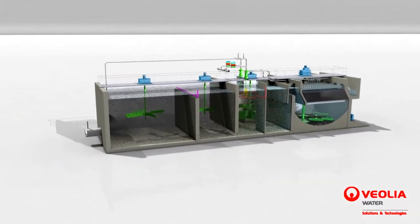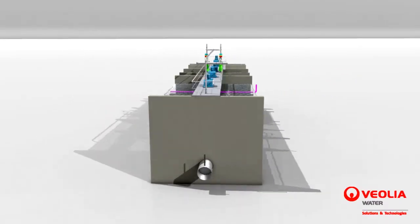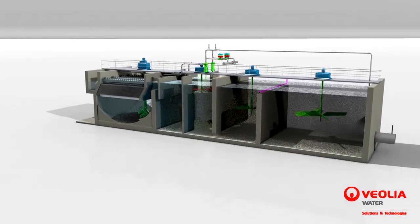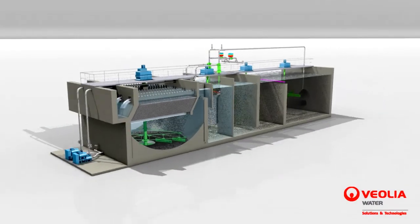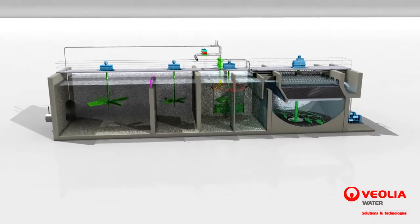Actiflo carb effectively removes micropollutants and refractory compounds to achieve unparalleled treated water quality. The process can be easily integrated into existing installations, allowing the rehabilitation of plants at significantly reduced costs.